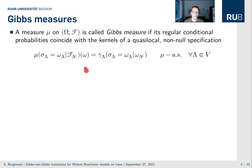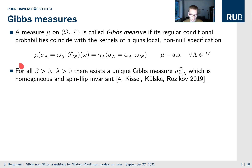Now we search for so-called Gibbs measures of this model. These are measures whose conditional probabilities coincide with these kernels, so with these local interactions. We know that for all beta and all lambda, there exists a unique spin-flip invariant and homogeneous Gibbs measure, which we call the intermediate measure for the Widom-Rowlinson model.